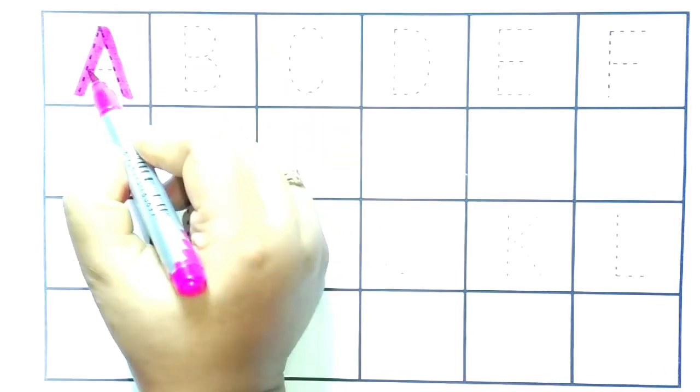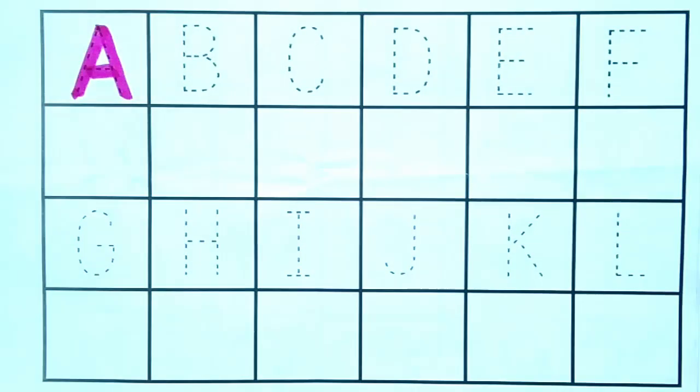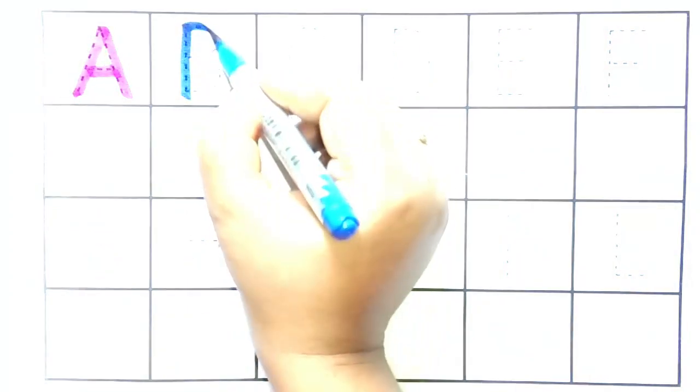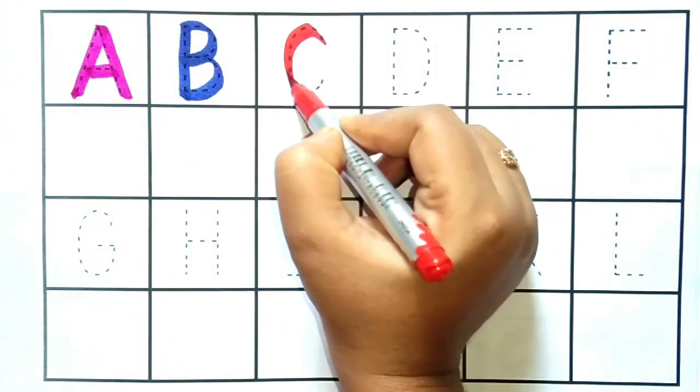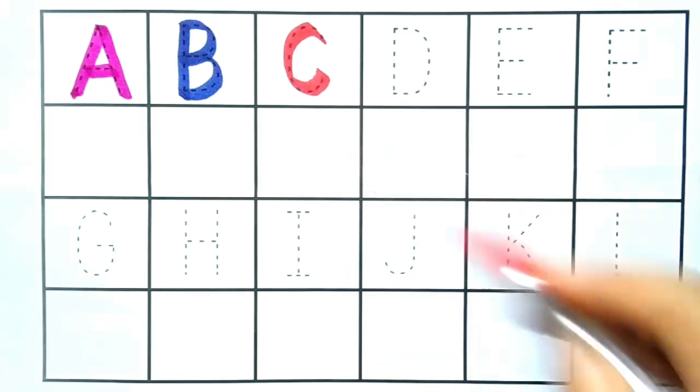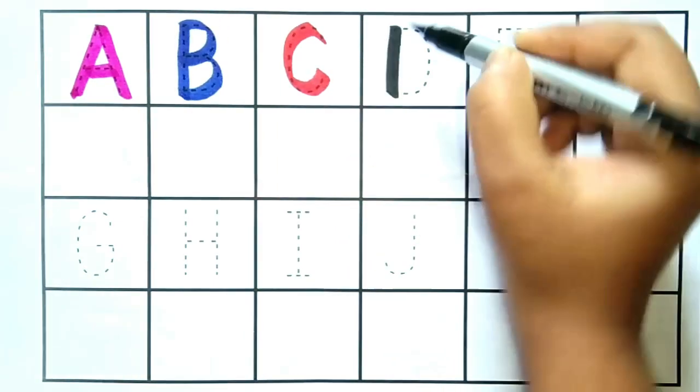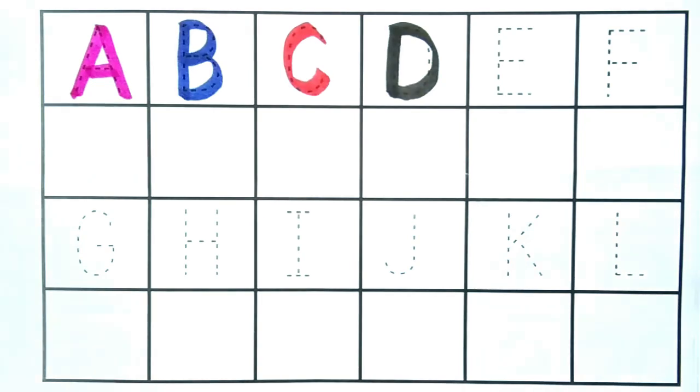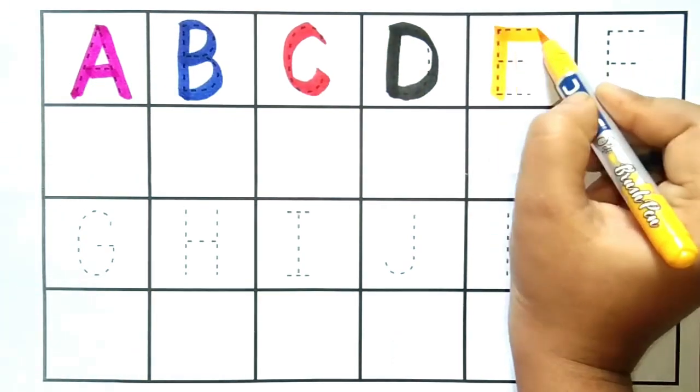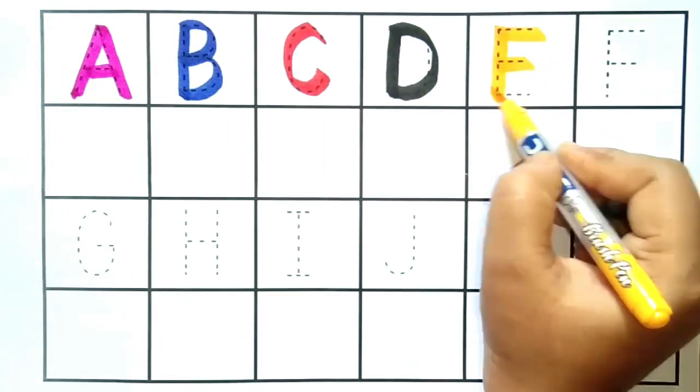A, A for aeroplane, A for aeroplane. B, B for ball, B for ball. C, C for cat, C for cat. D, D for doll, D for doll. E, E for elephant, E for elephant.